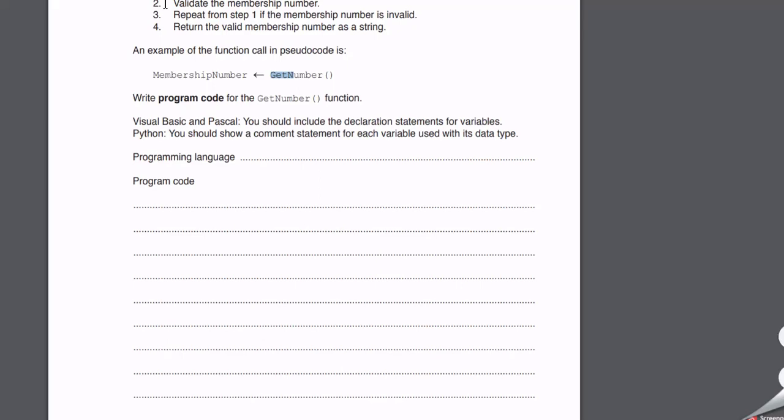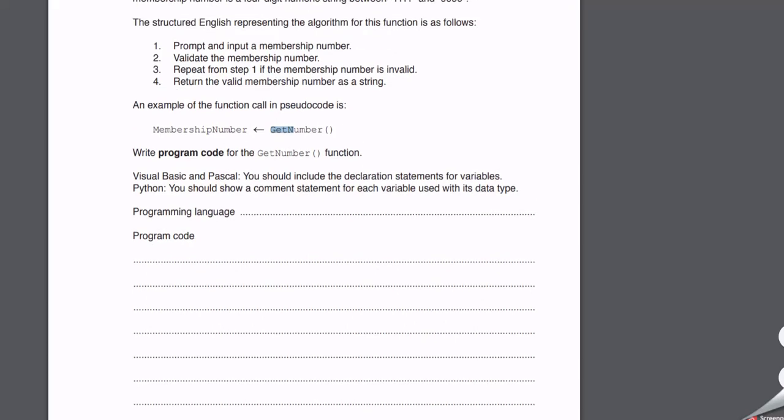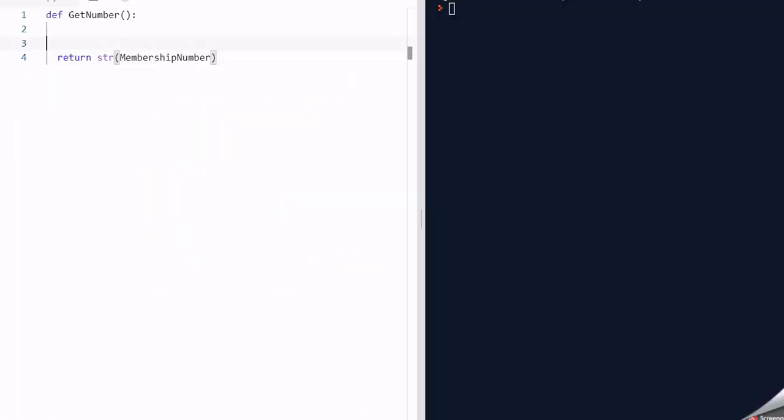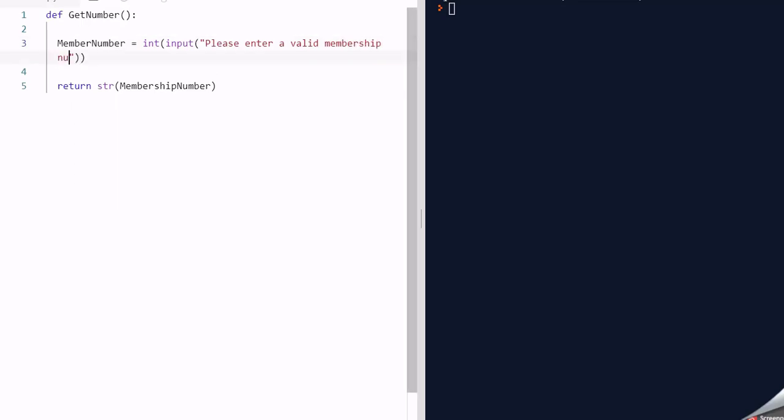So there's different ways I can do this. The first thing I'm going to do is get them to enter in a membership number, nice and easy. So I'm going to do member_number equals int input, please enter a valid membership number. By the way, I was hoping you would have paused the video before seeing my solution.